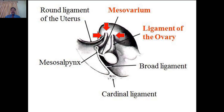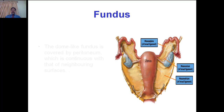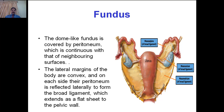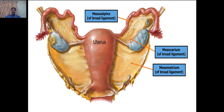Students should not get confused with the arrangement of the structures in the living versus a wet specimen in the dissection hall. The dome-like fundus is covered by peritoneum, which is continuous with that of the neighboring surfaces. The lateral margins or borders are convex, and on each side their peritoneum is reflected laterally to form the broad ligament, which extends as a flat sheet to the pelvic floor.